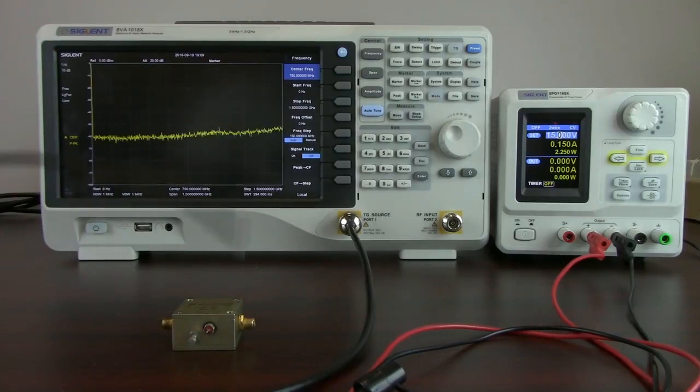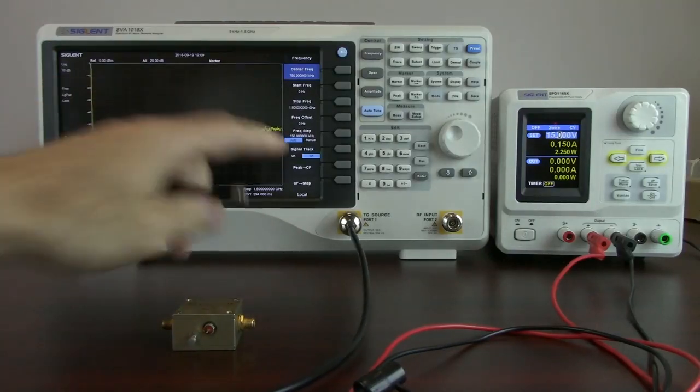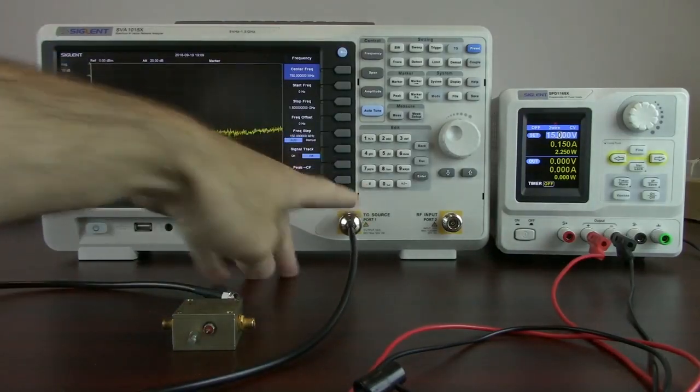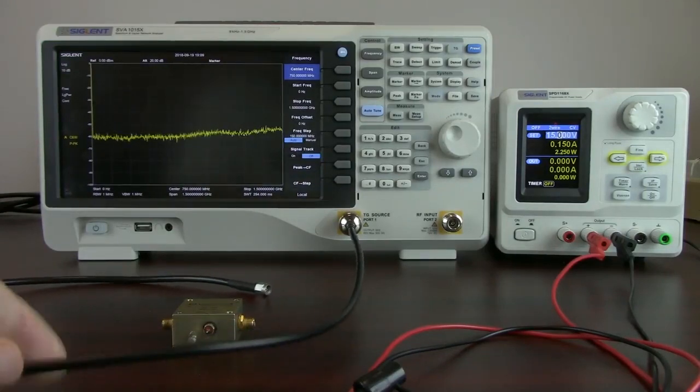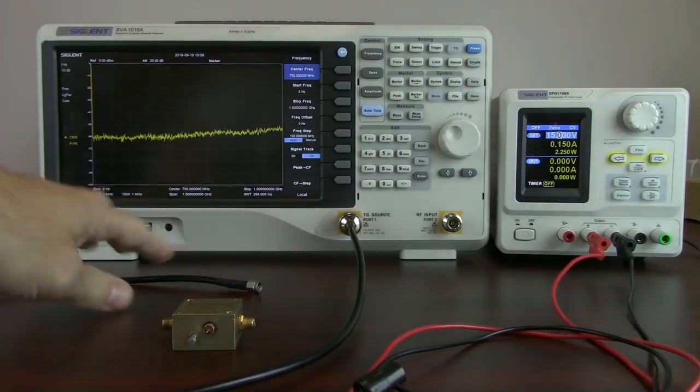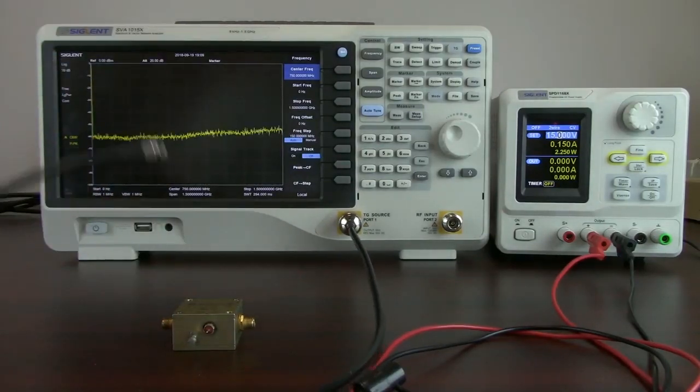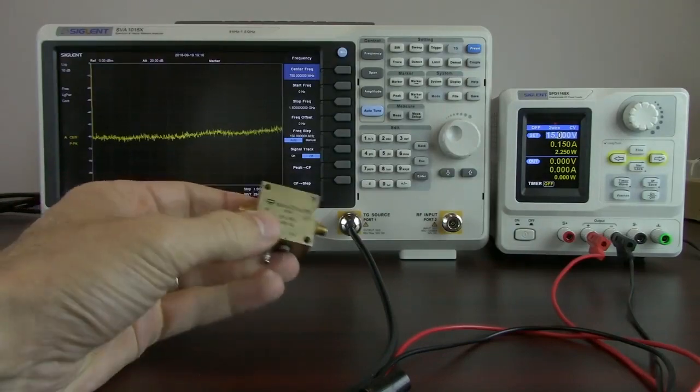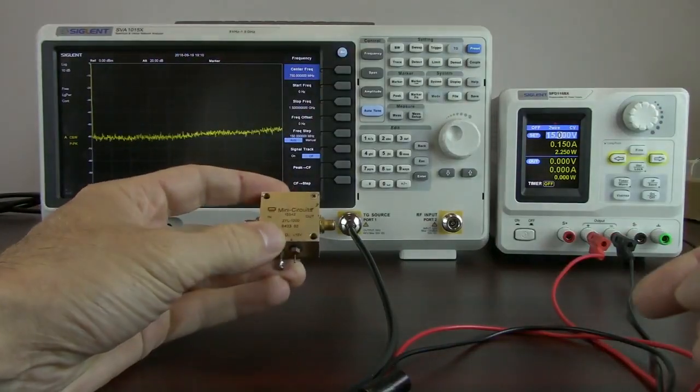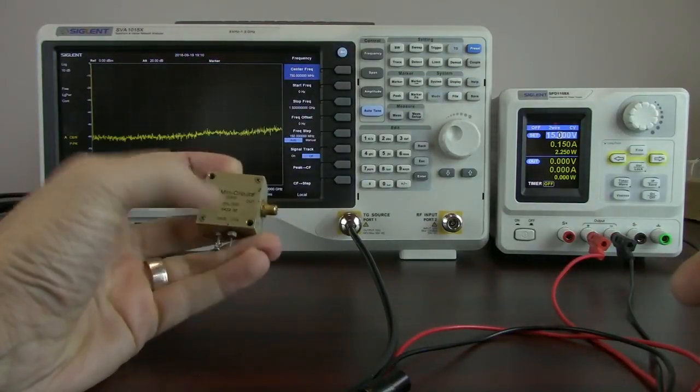So the first thing that we're going to do is we have an SMA to N type connector here on the tracking generator source output. The tracking generator source is going to source a particular frequency or range of frequencies. Those are going to go into the device under test, and then we're going to get a certain amount of reflected energy based on the impedance match.